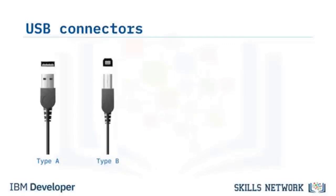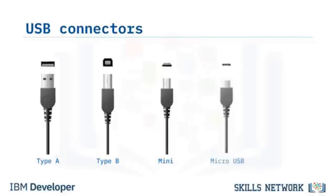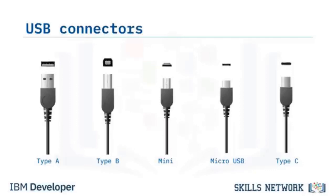The Type A USB port has an elongated rectangle with 4 pins and is typically used for keyboards and mice. Type B is almost square with beveled top corners and is mostly used with printers and scanners. Mini USB ports were introduced for smaller devices like cameras and mobile phones, with 9 pins. Micro USB ports are similar width but much thinner with 5 pins. The 24-pin Type C with a reversible connector is designed to replace various Type A and B connectors.